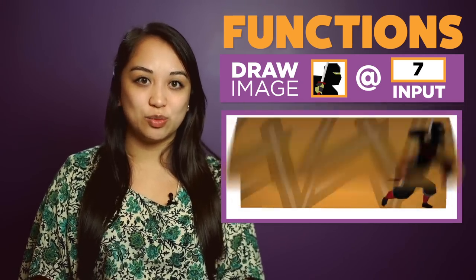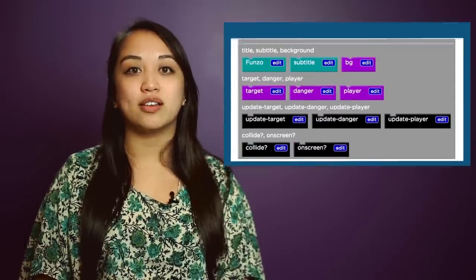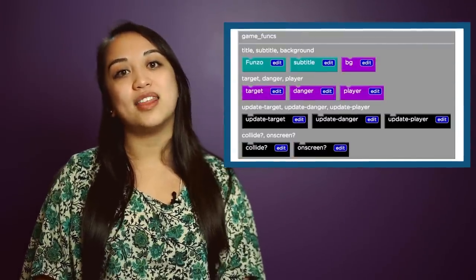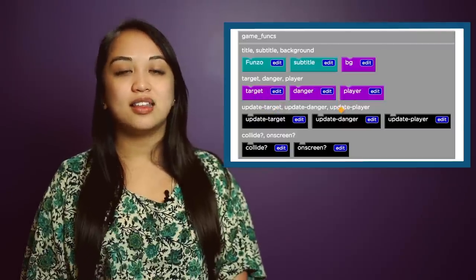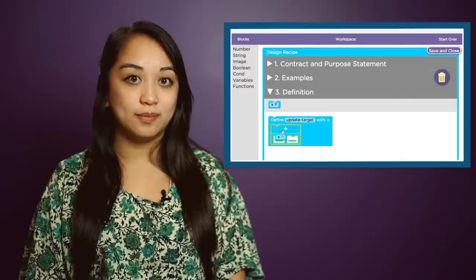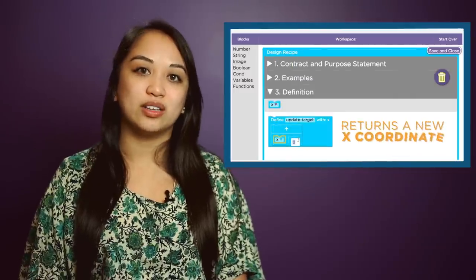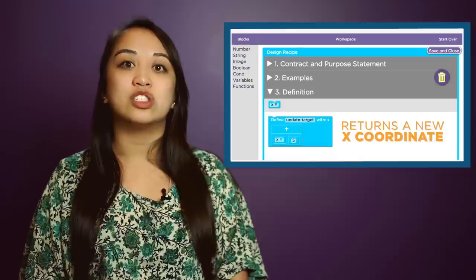To make the target and danger sprites move across the screen, you will modify the update target and update danger functions. These functions will take in the current x-coordinate of each sprite and return a new x-coordinate that is either greater than the previous x-coordinate if it wants to move from left to right.